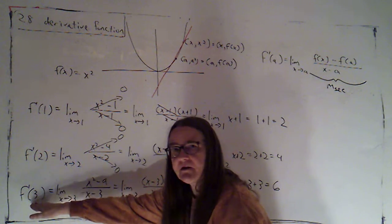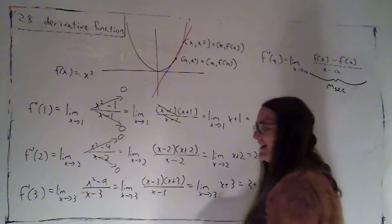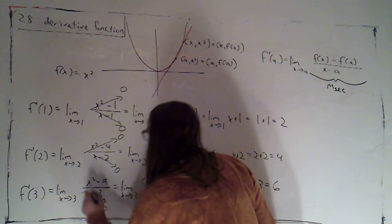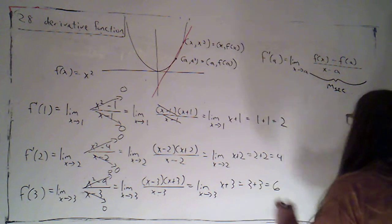And then I did the same thing here to find the derivative at 3. It's the limit as x goes to 3. Rise and run both go to 0. We factor and cancel, and we get 6.